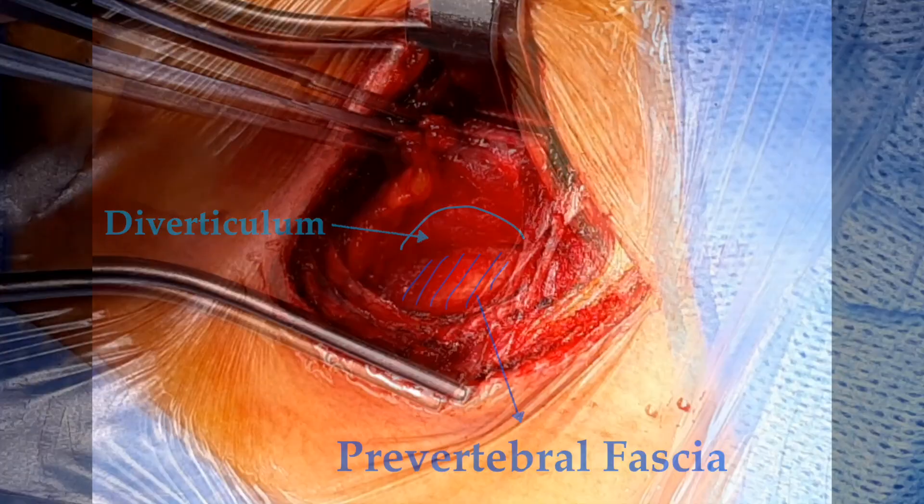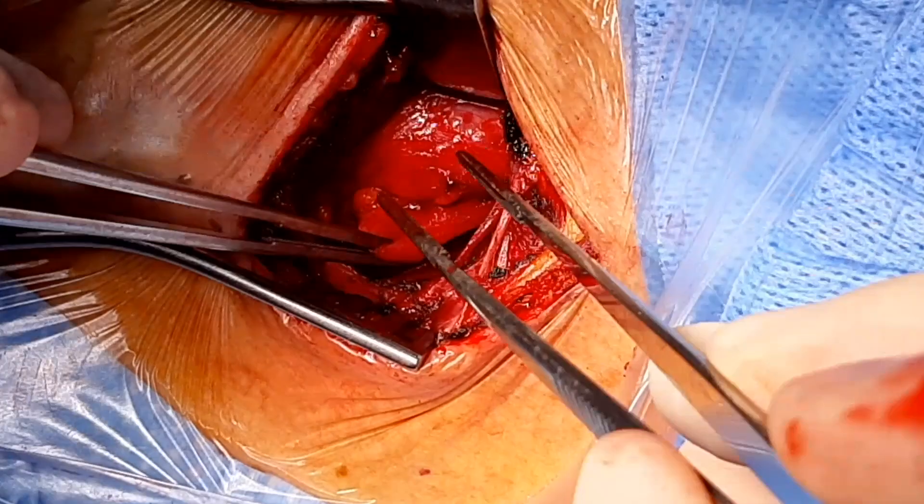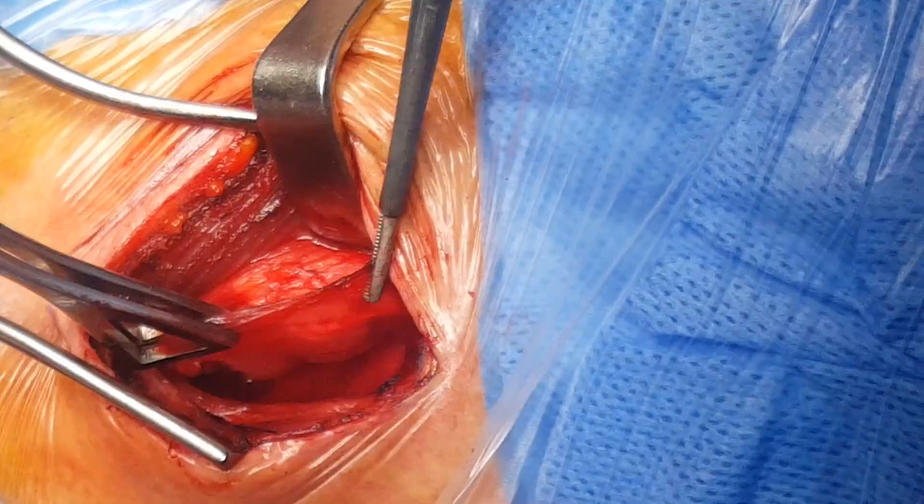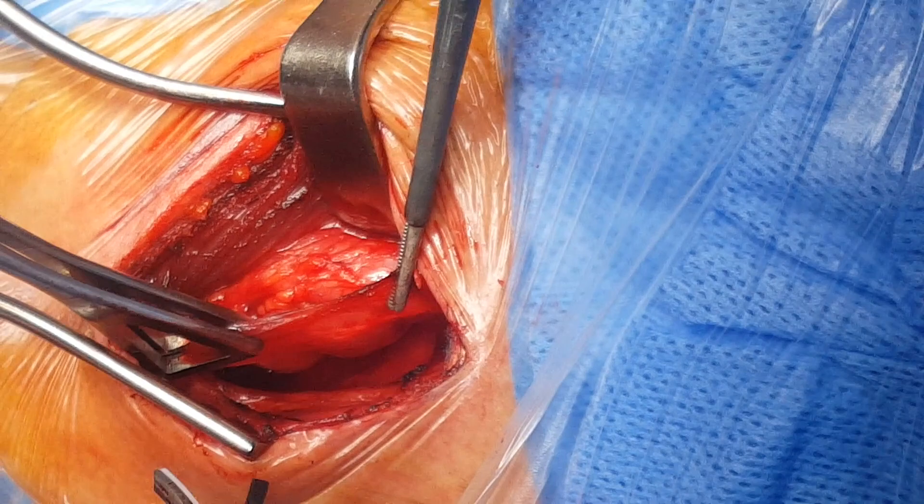Dissection is required to free the diverticulum from the surrounding tissues and adhesions and to reach the neck of the diverticulum. This surrounding tissue is then divided with the ultrasonic scalpel.